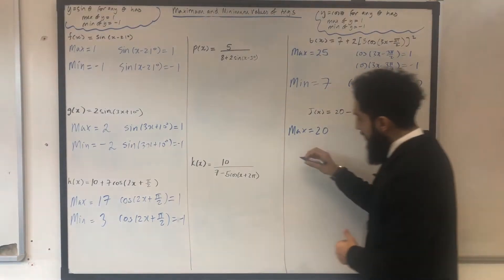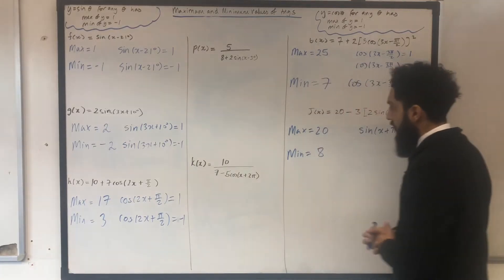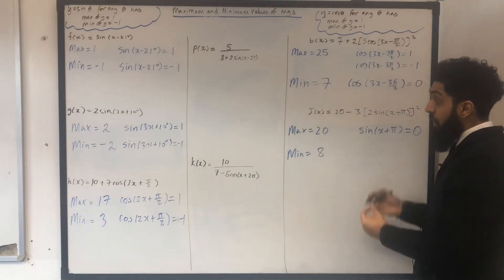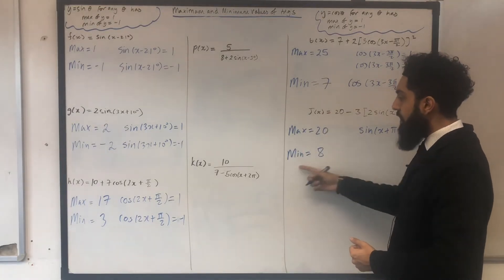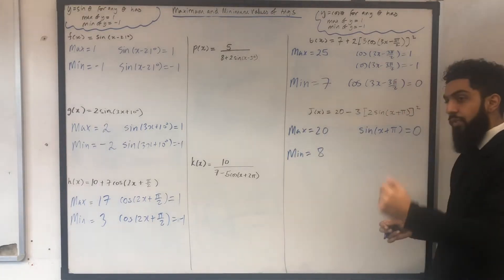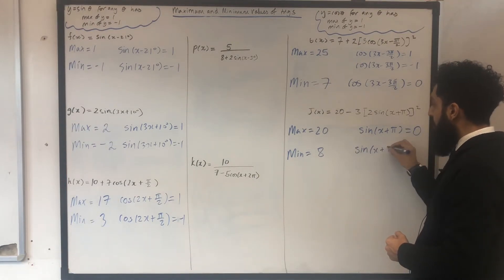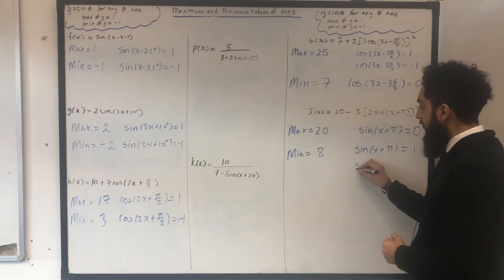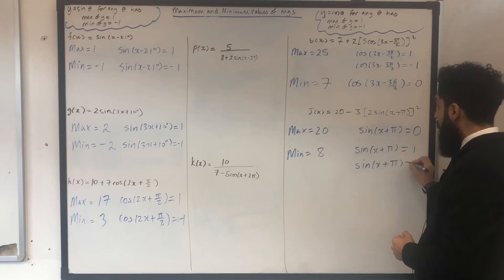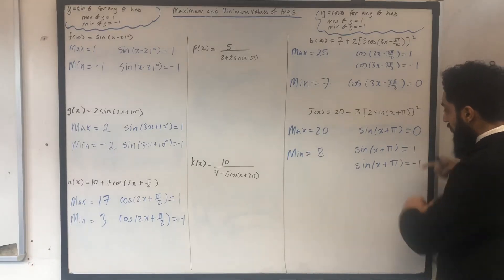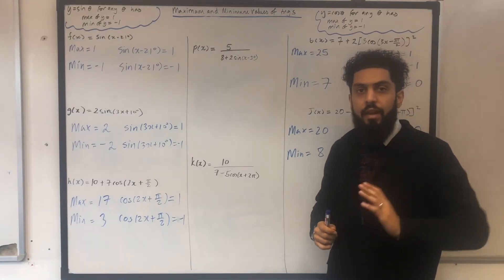The minimum value of the function g of x is equal to 8. I could be asked in the exam to work out the smallest positive value of x for which g of x has a minimum of 8. I need to solve two equations: sine in bracket x plus pi equal to 1, and sine in bracket x plus pi equal to minus 1. I solve these two equations and then take the smallest positive value of x.